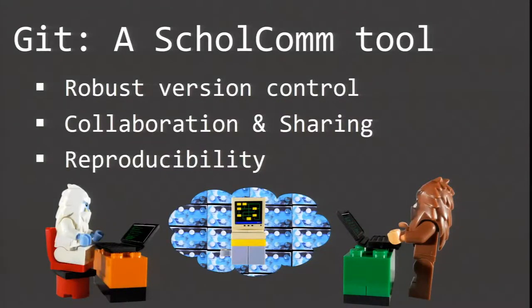We pose in this presentation that Git is a tool of scholarly communication. For those with no familiarity, Git is an open source tool for version control — a way for you to track changes to your project without having multiple files or creative renaming. It allows for collaboration and sharing in a pretty robust environment, and it enhances reproducibility because all changes made to the project are recorded in the Git repository, including timestamps and who made the changes.